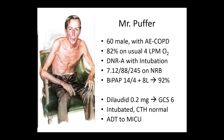We'll start with a case and follow it during the presentation. Here's Mr. Puffer — a 60-year-old male with acute exacerbation of COPD. He comes to the emergency room because of hypoxia, getting short of breath, at 82% on his usual 4 liters O2. He does not want resuscitation but is okay with intubation. Blood gas shows respiratory acidosis.